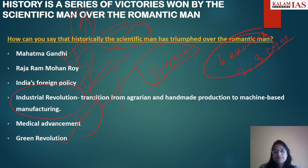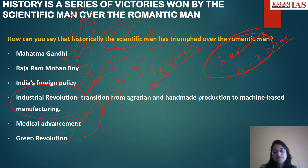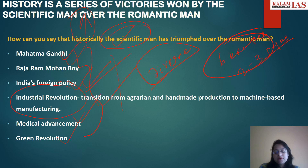Then you can talk of the industrial revolution — how it transitioned from agrarian and handmade production to machine-based manufacturing. How the agrarian and man-made production were led by romantic thoughts with no use of science, knowledge, or techniques. But when we transitioned to machine-based manufacturing, science won, playing a crucial role in scientific and technological advancements. Innovations in machinery, steam power, and manufacturing processes led to significant economic and societal changes.